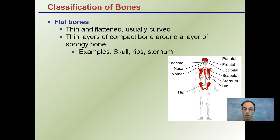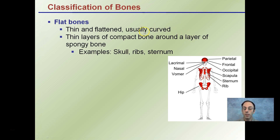Flat bones are thin and flattened, usually curved, which helps give them some strength. There are thin layers of compact bone around a layer of spongy bone. Our skull, our ribs, our sternum, and also our hips fall under the classification of flat bones. The reason why they tend to be a little bit curved is that it gives them a little bit more structural integrity.